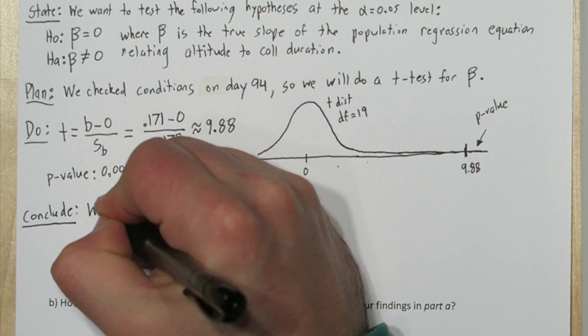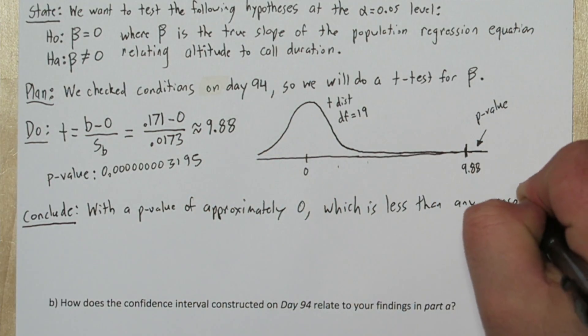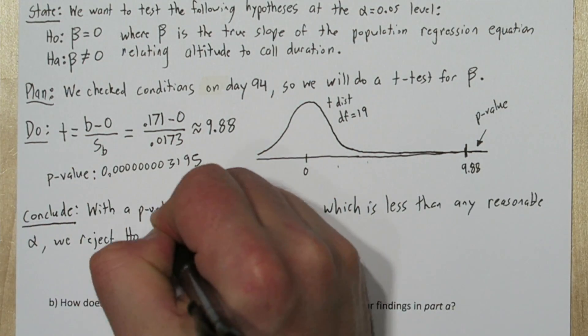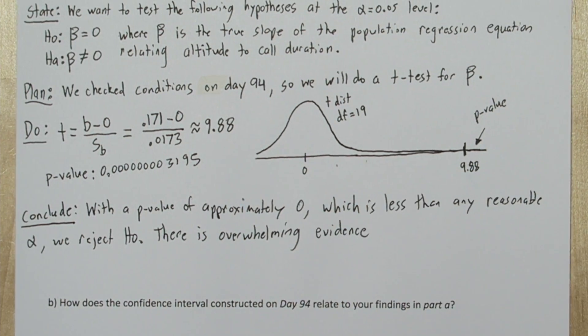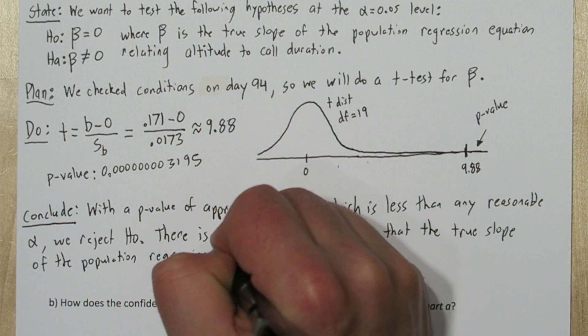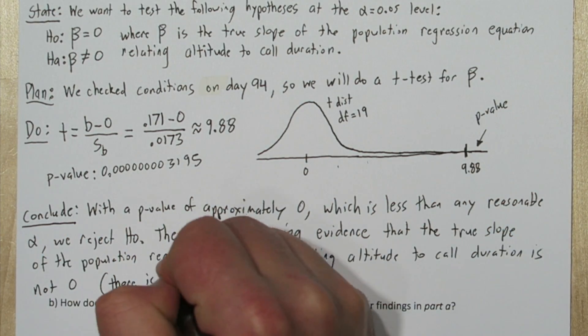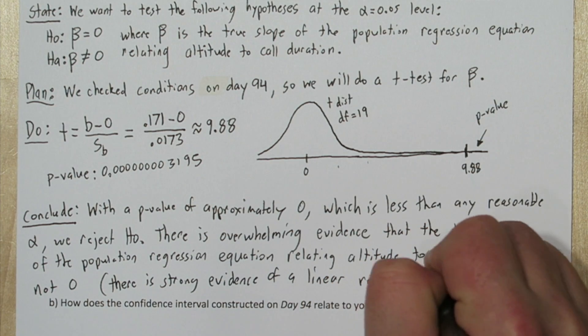Now we're ready to conclude. With the p-value of approximately zero, which is less than any reasonable alpha, we reject the null hypothesis. There is overwhelming evidence that the true slope of the population regression equation relating altitude to call duration is not zero. That means there's strong evidence of a linear relationship.